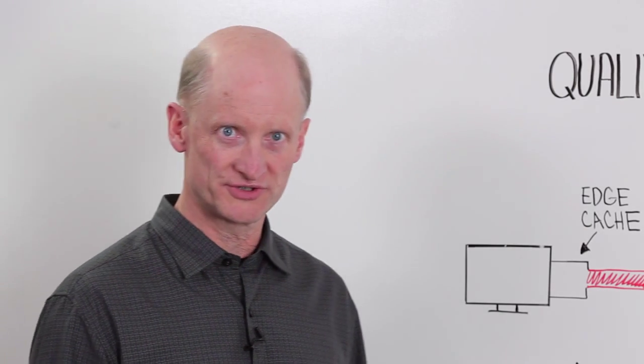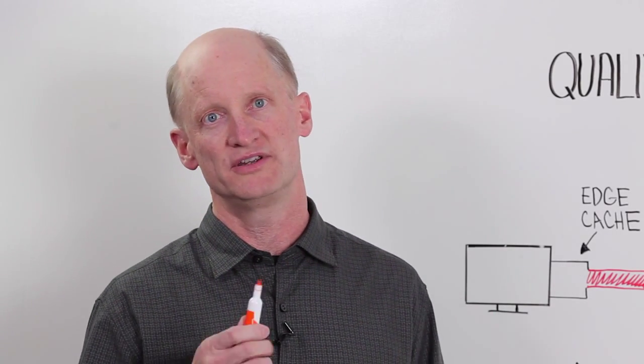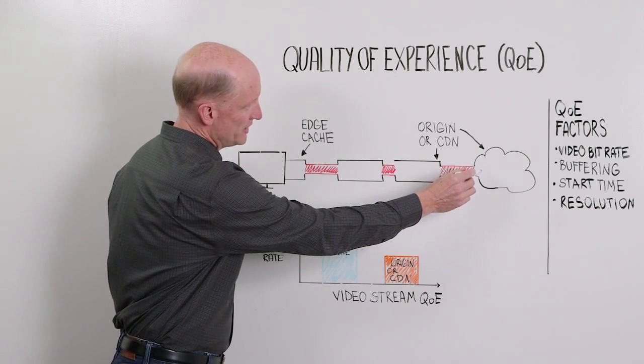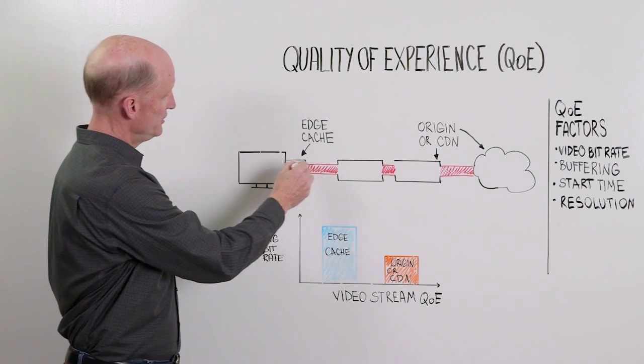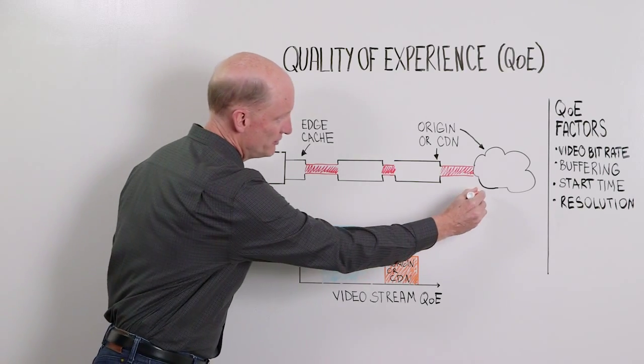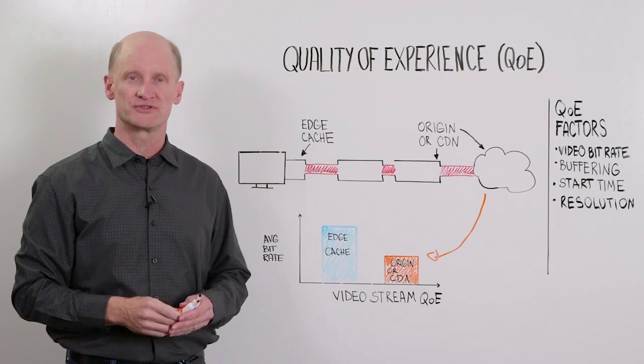Now that we've described these two scenarios, we can actually measure both and compare the quality of experience in each case. In the first case, as you recall, we were measuring the path of video traveling from the origin server CDN, and we can, for many streams, establish the QoE or the average bit rate for that set of streams.